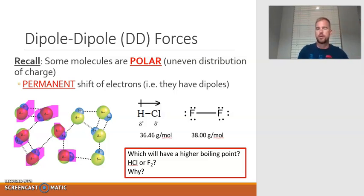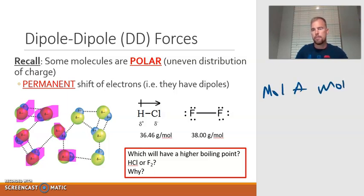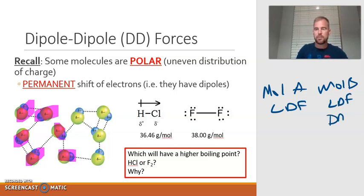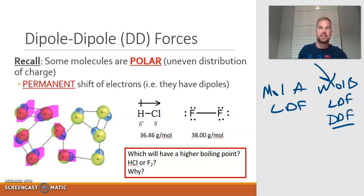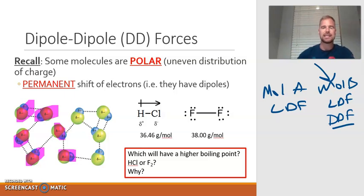It's important to point out that all molecules experience London dispersion forces. So if I was comparing molecule A to molecule B, both are going to have London dispersion forces, but maybe molecule B in addition has dipole-dipole forces. The fact that it has this additional intermolecular force would make molecule B much stronger and would favor a stronger state of matter, higher boiling points, higher melting points, things like that.